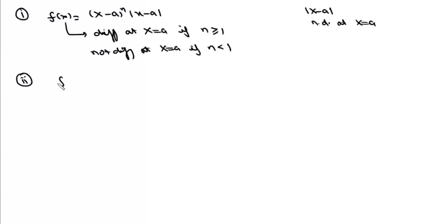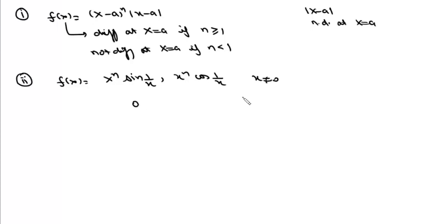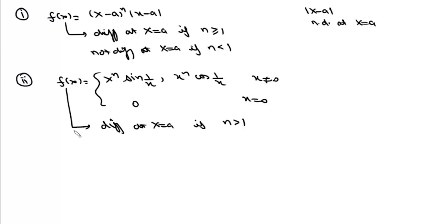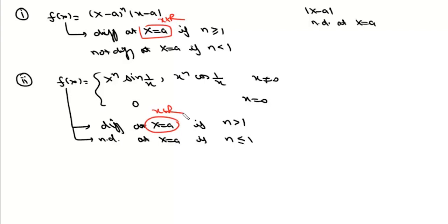Similarly, we can write a function f(x) as either x^n · sin(1/x) or x^n · cos(1/x) when x ≠ 0, and 0 at x = 0. This function is differentiable at x = 0 if n > 1, and not differentiable at x = 0 if n ≤ 1. If n ≥ 1, it is differentiable for all x belonging to ℝ.